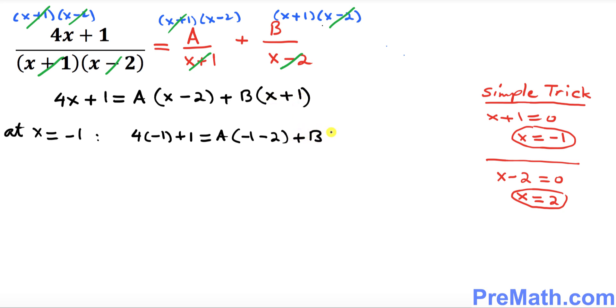So what we got: negative 4 plus 1 makes negative 3, equal to negative 3A, and this B is gone. Which tells me that A equals 1.